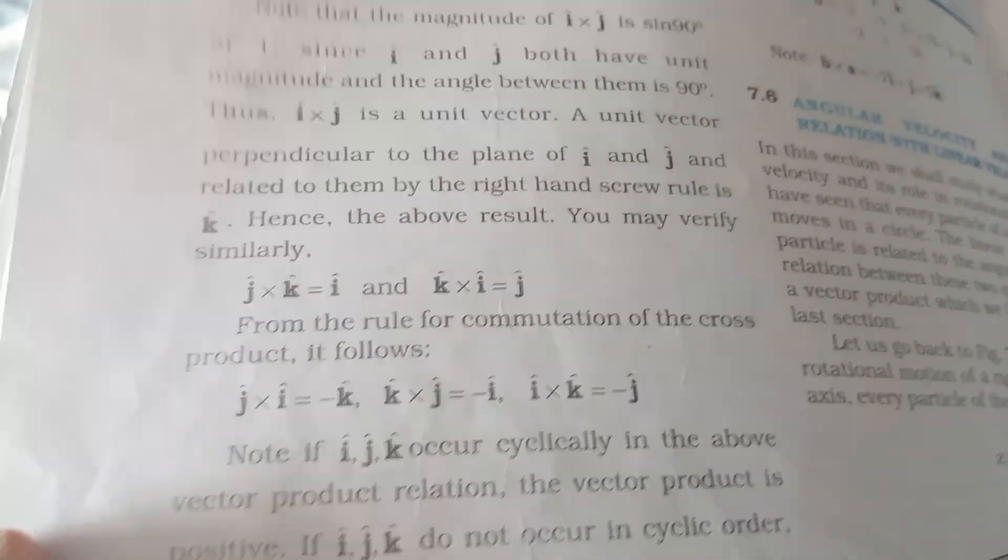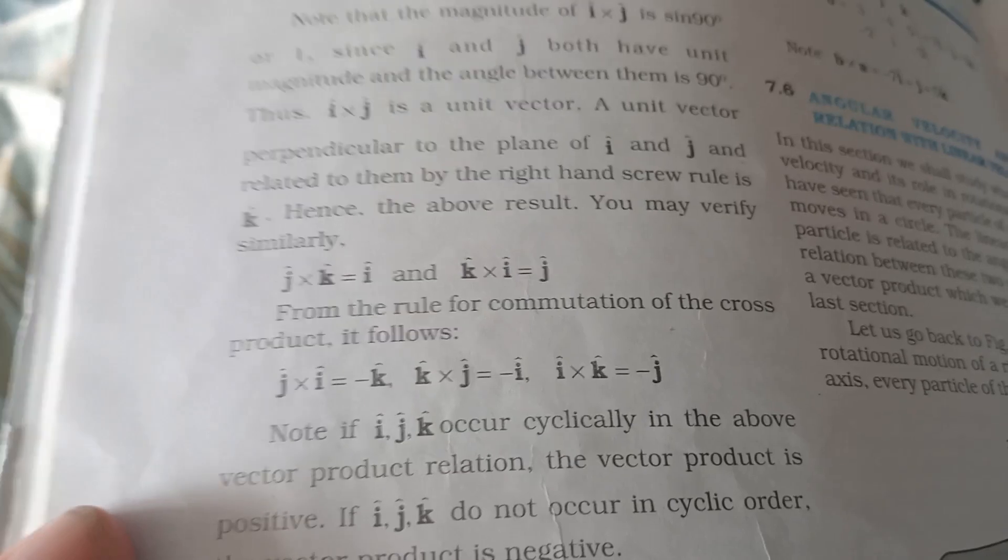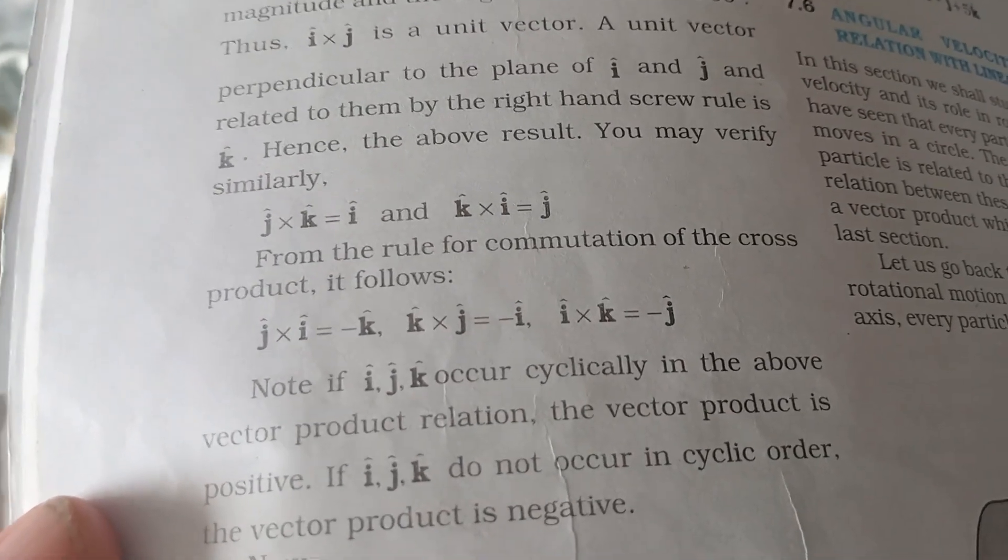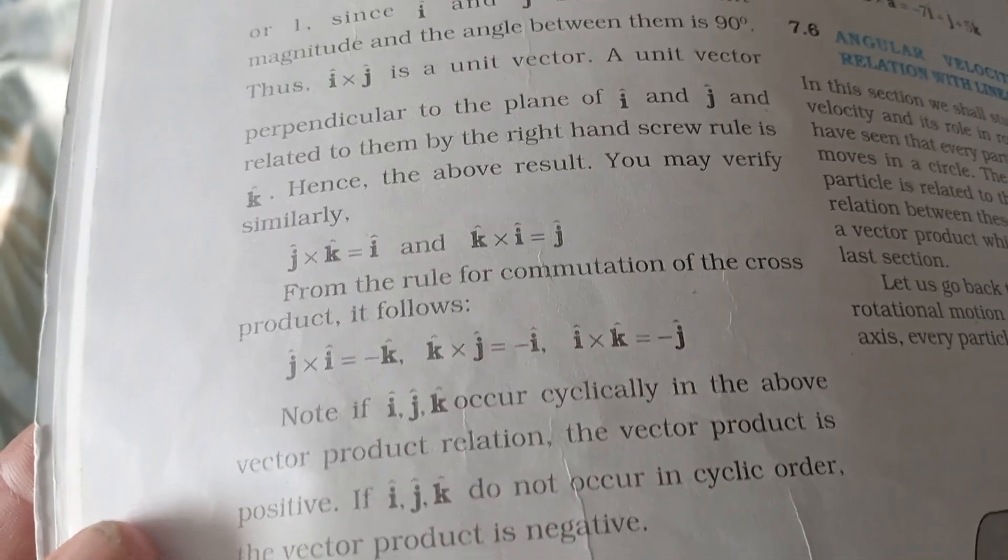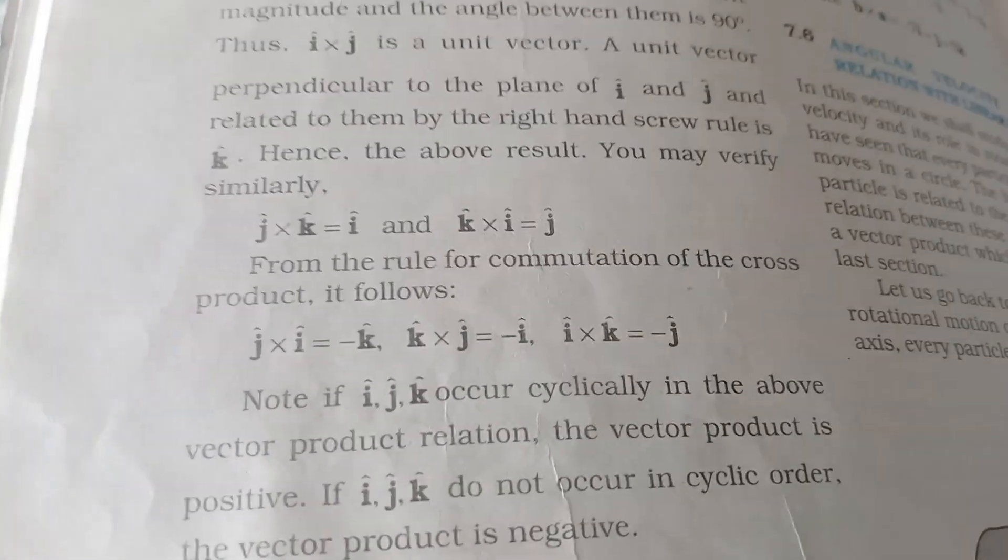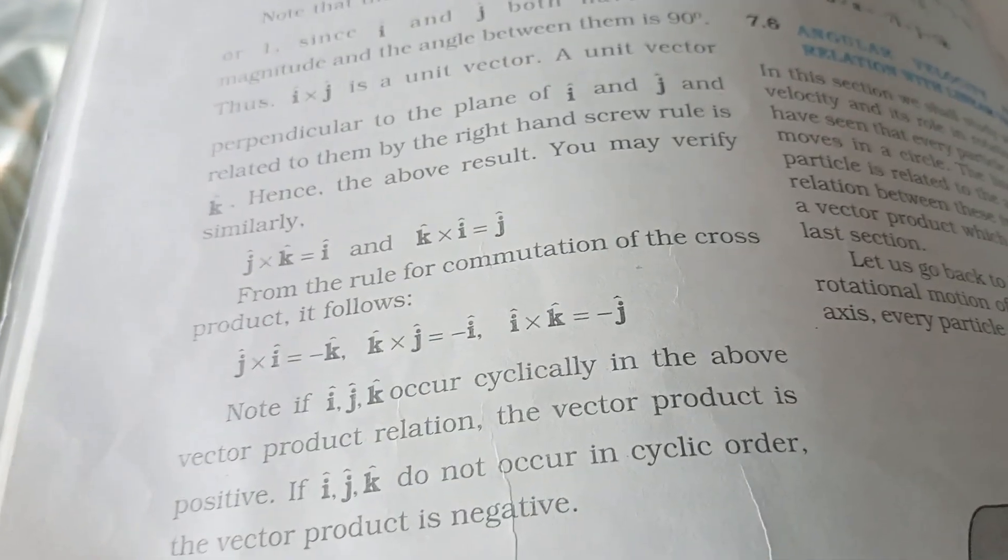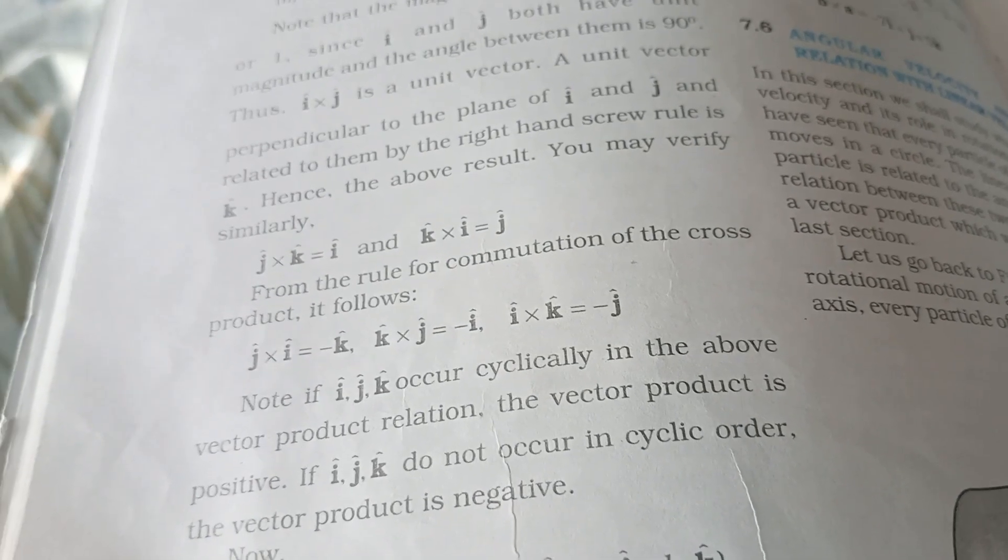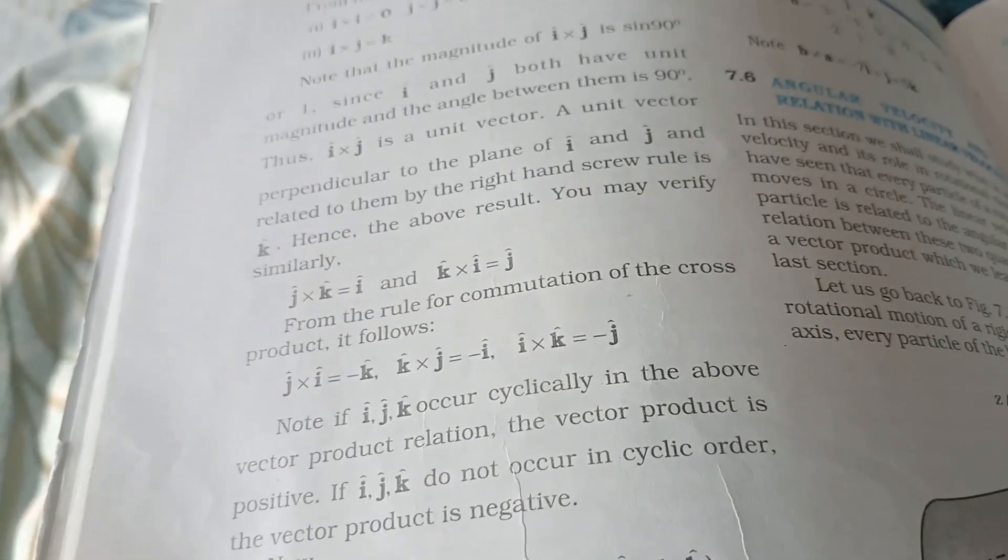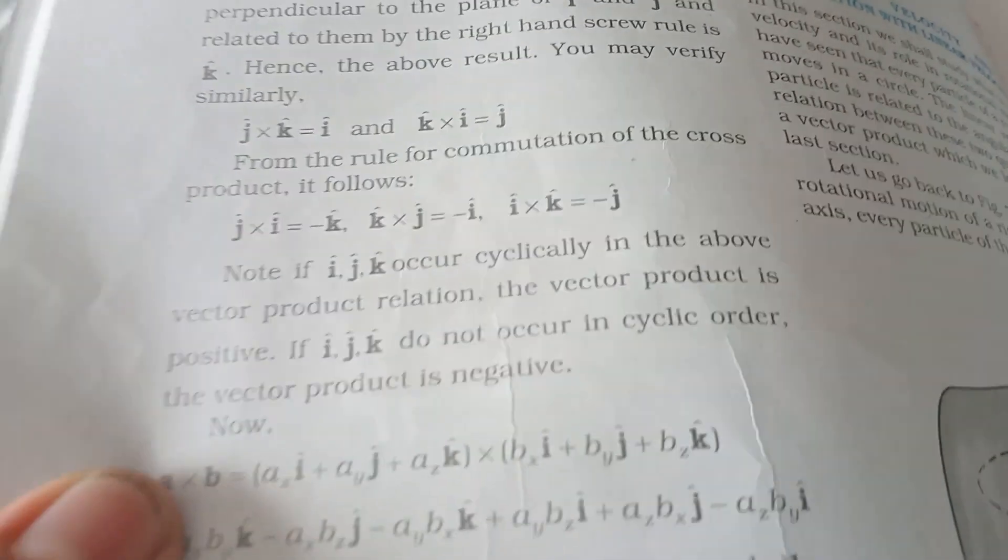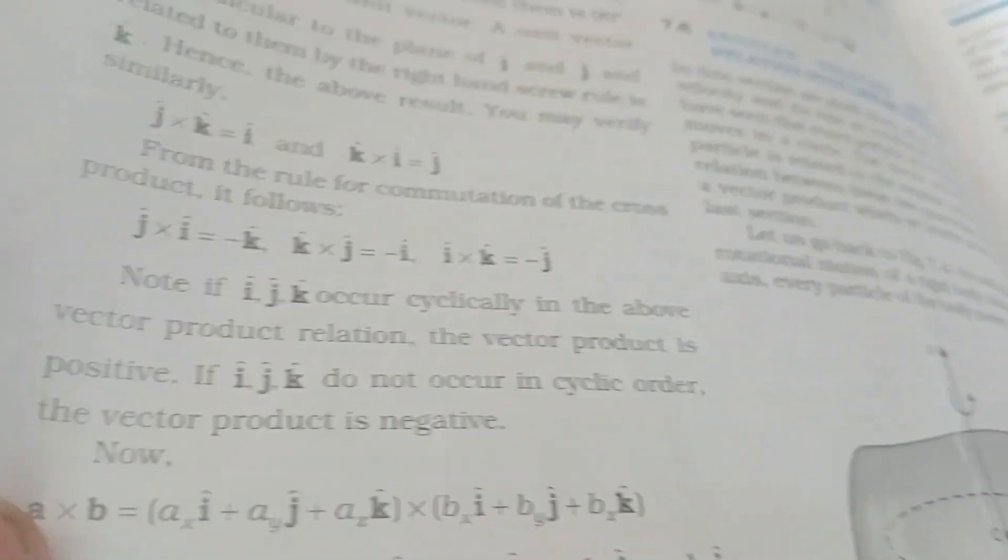From the rule for commutation of the cross product, it follows: when i cross j equals k-cap, then j cross i equals minus k-cap. If j cross k equals i-cap, then k cross j equals minus i-cap. If k cross i equals j-cap, then i cross k equals minus j-cap. The direction is opposite.